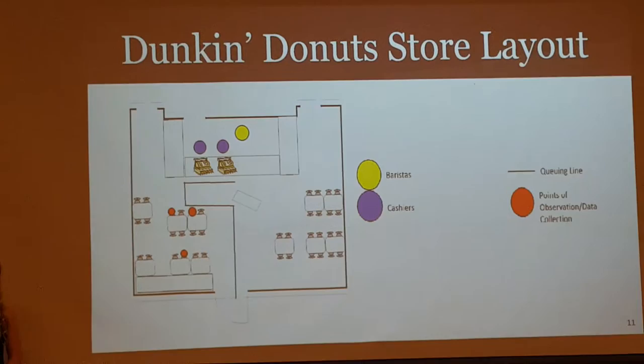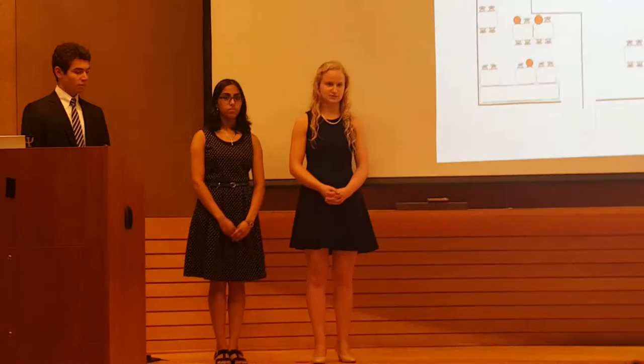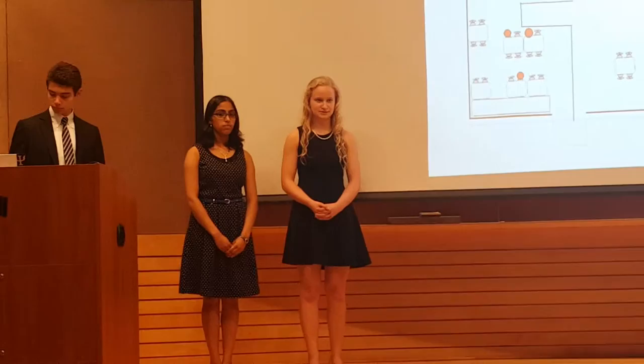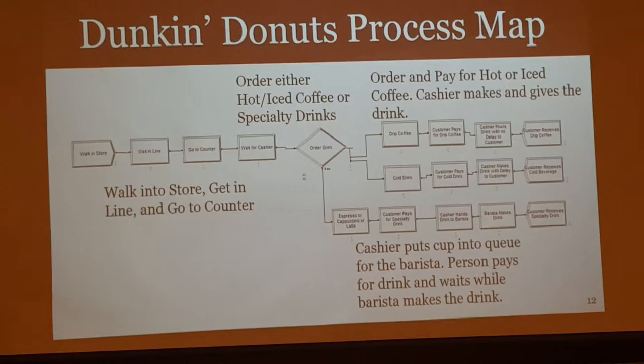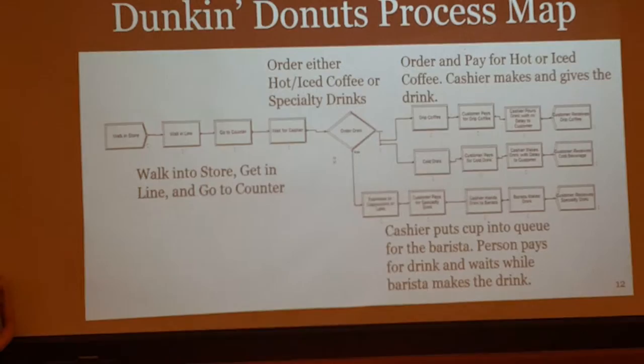This is the Dunkin' Donuts store layout, which is slightly different from Starbucks. There was only one barista at Dunkin' Donuts as opposed to two at Starbucks, and the line to the cashier is more direct at Dunkin' Donuts. The main difference in the Dunkin' Donuts process map is that when a customer orders either a hot or an iced drip item, it's made by the cashier — whereas at Starbucks, only hot drip items are made by the cashier. At both stores, any other items are made by the barista.